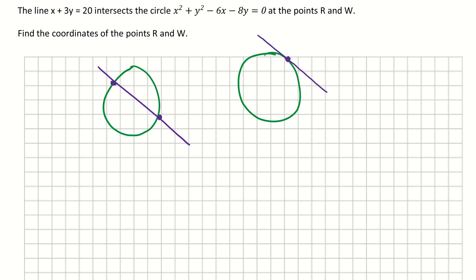In this question it's saying find the coordinates of points R and W, which means there are two, so we're going to have a line intersecting a circle at two points.